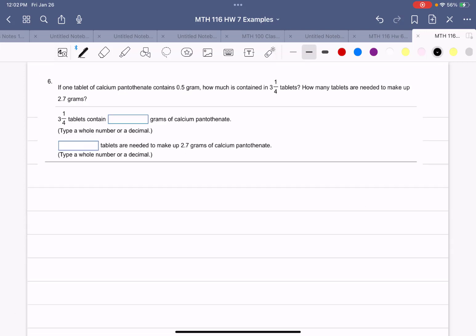Example six. If one tablet of calcium pantothenate contains 0.5 grams, how much is contained in three and a quarter tablets? So how many tablets do we need to make up 2.7 grams? So we have two questions here. One tablet is a half of a gram. How much is in three and a quarter tablets?